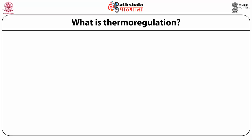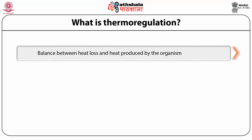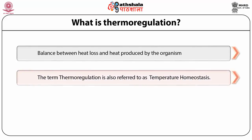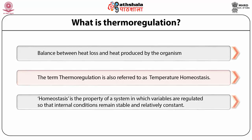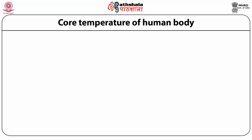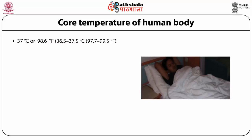Thermoregulation is the balance between heat loss and heat produced by the organism, sometimes referred to as temperature homeostasis. Homeostasis is a property of a system in which variables are regulated so that internal conditions remain stable and relatively constant. The core temperature of the human body is maintained between 36.5°C and 37.5°C, or 97.7°F to 99.5°F — generally expressed as 37°C or 98.6°F.